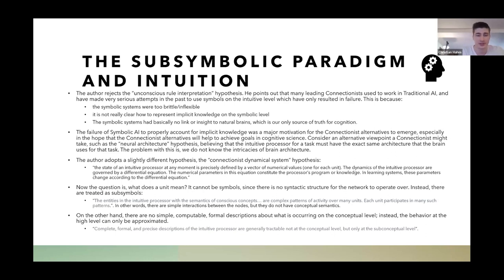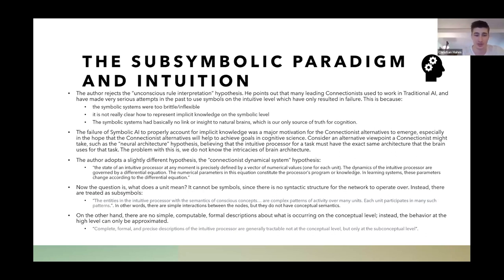The entities in the processor with the semantics of conscious concepts — the symbols — are actually complex patterns of sub-symbolic activity over many units. Every unit participates in representing many symbols at the higher level. There are simple interactions between nodes, but the nodes themselves do not have conceptual semantics. Instead, each node contributes to a higher level of conceptual semantics.